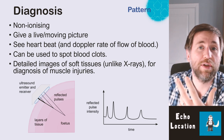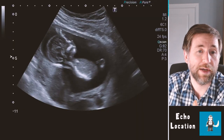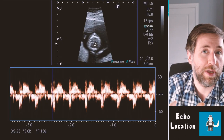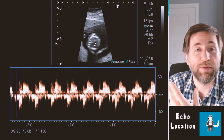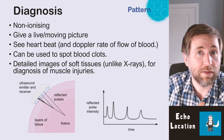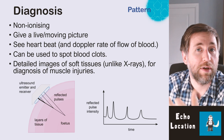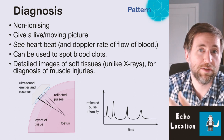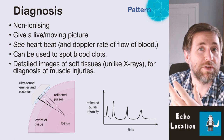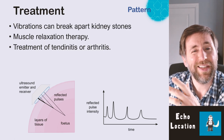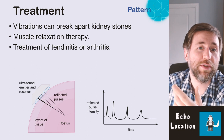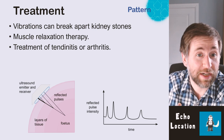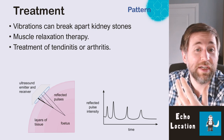Ultrasound is really useful for diagnosis because it's non-ionizing and gives a live, moving picture. You can see a heartbeat, and Doppler shift shows the rate of blood flow — useful for spotting blood clots, heart problems, and diagnosing issues in unborn fetuses. It also gives detailed images of soft tissues which X-rays can't provide, useful for muscle injuries. Ultrasound can even be used for treatment: vibrations can break kidney stones apart, aid muscle relaxation, and treat tendonitis or arthritis.